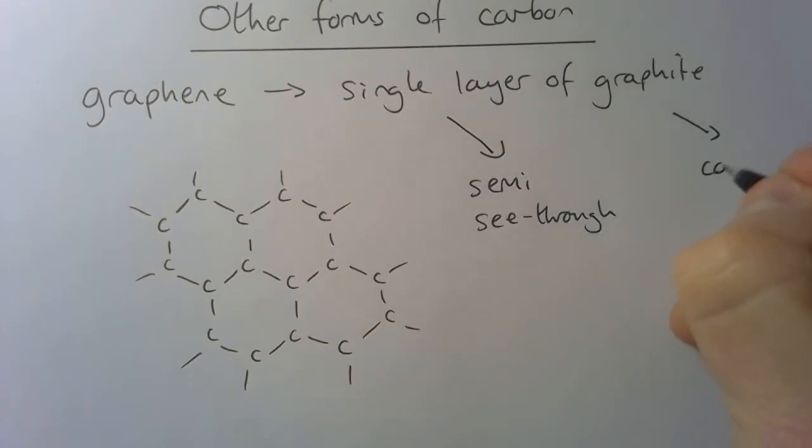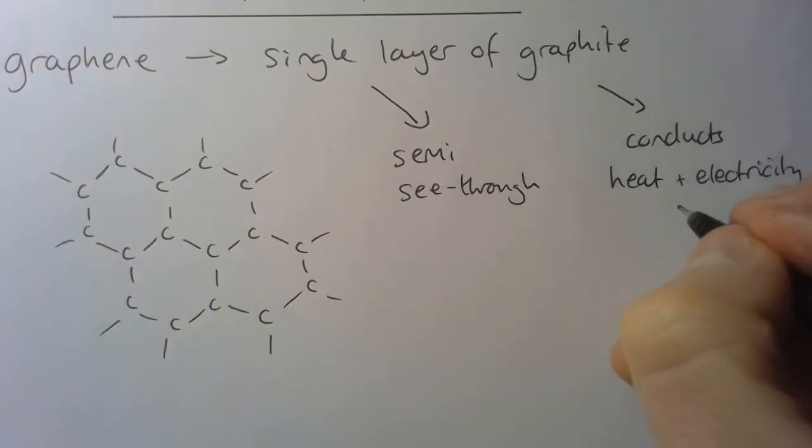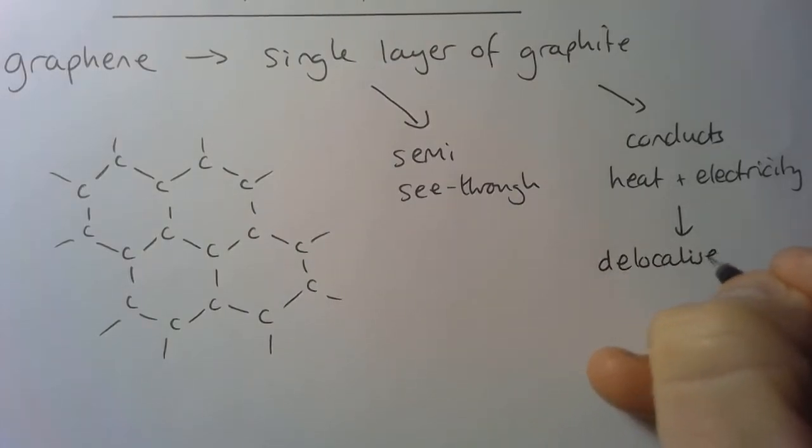Because it's graphite, it also conducts electricity, or conducts heat and electricity well. We've seen with graphite why that is. Each carbon atom has a spare or delocalized electron.